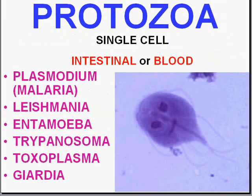By far, the single most important clinical worldwide protozoan infecting and killing the largest number of people worldwide is malaria, or the plasmodium species. There is another significant worldwide protozoan called leishmania, transmitted by the bite of the sand fly, which has worldwide importance but not so much in the United States.